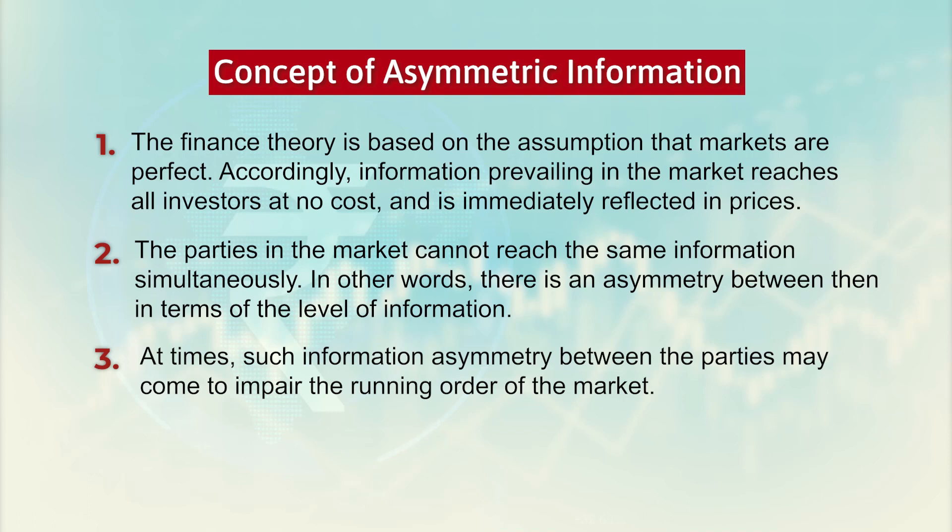Such information asymmetry between the parties may come to running order of the market. Whenever we call for a market functioning, we believe that both agents of the market must have the same set of knowledge. But because of the imperfection in the knowledge, in most times price discrimination or price distortion takes place and that makes the market to be more and more non-symmetric.